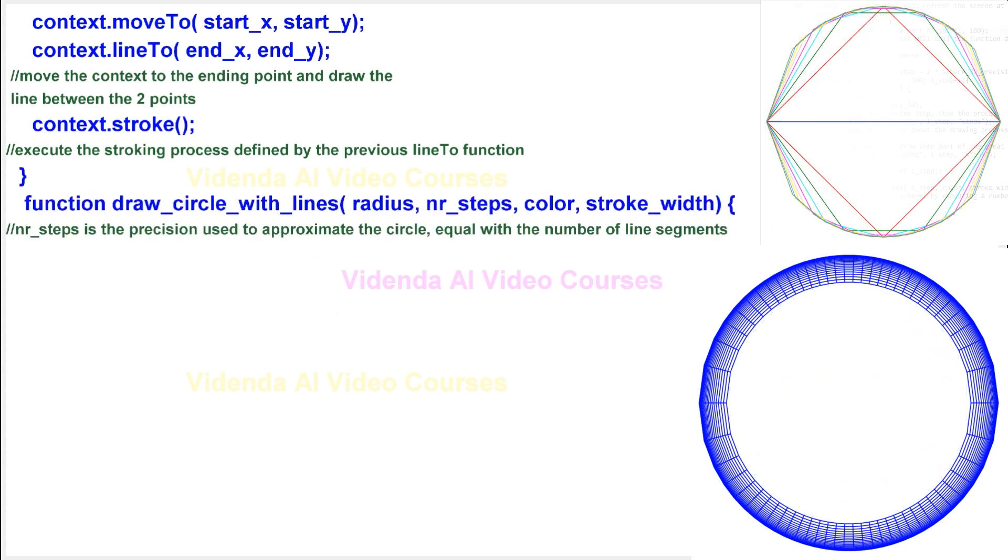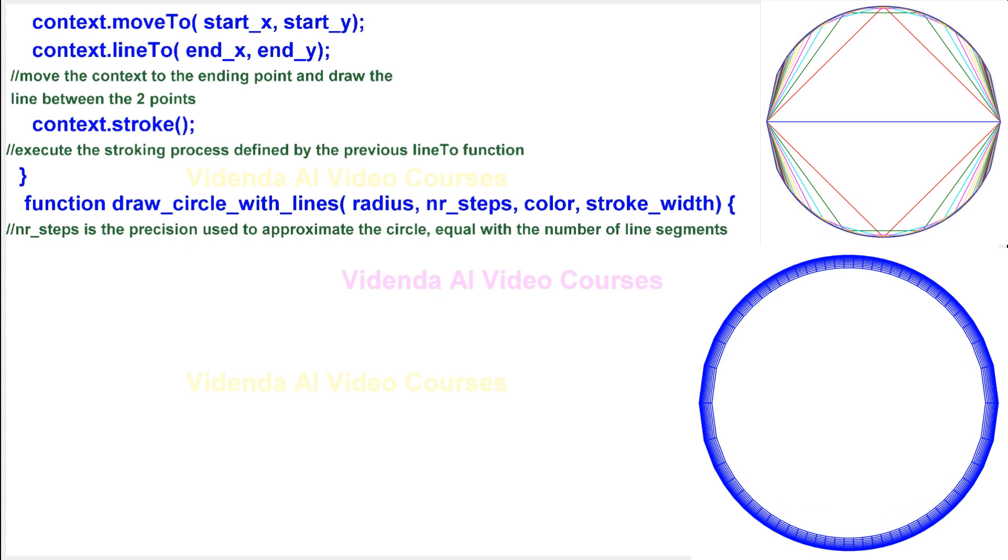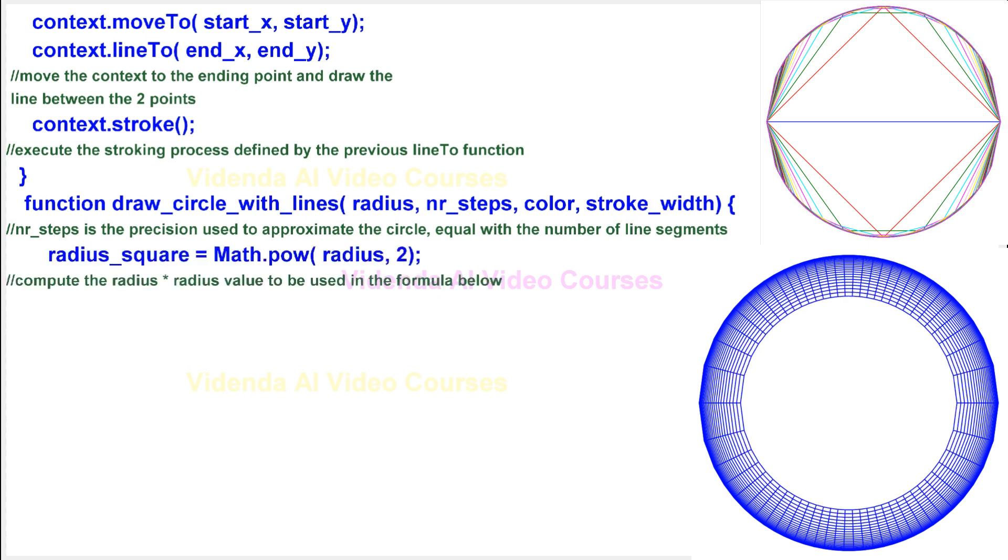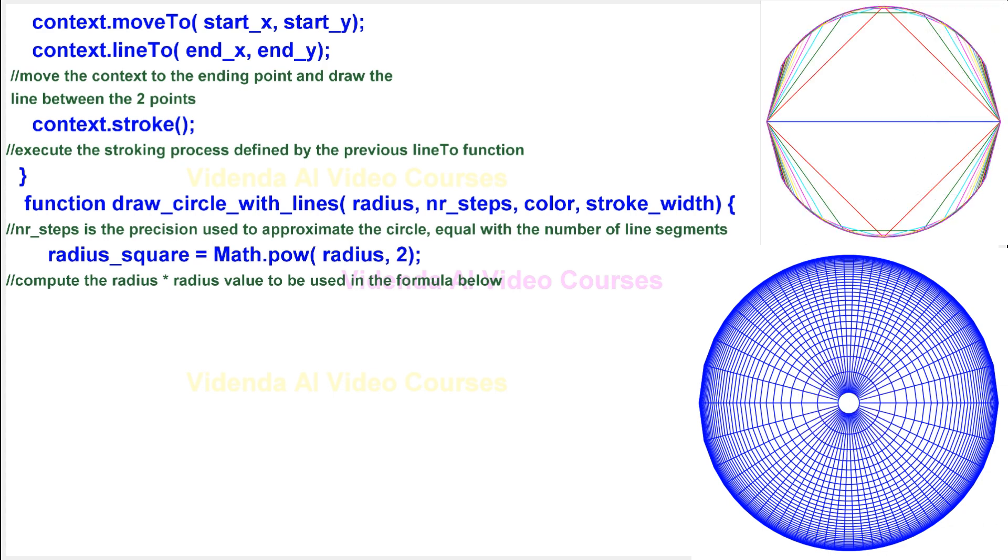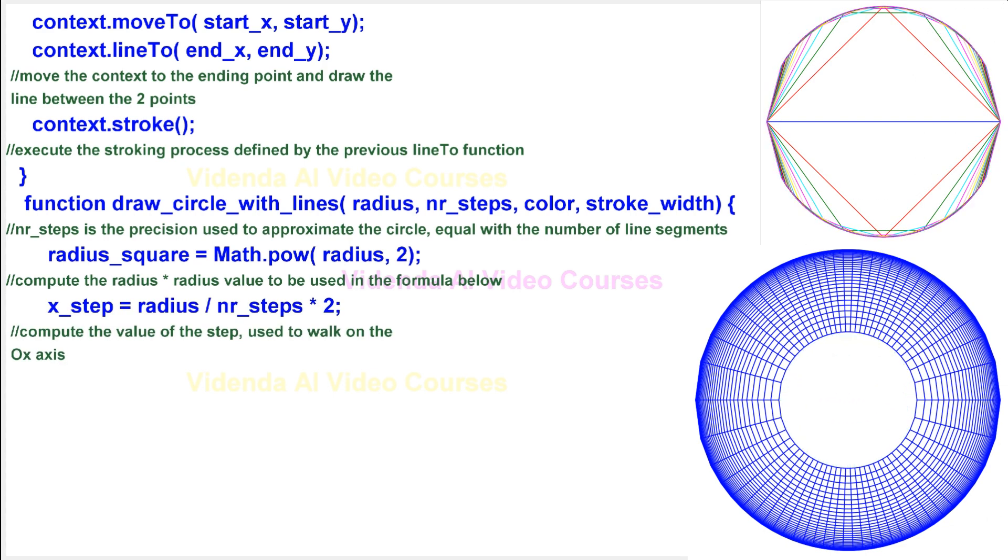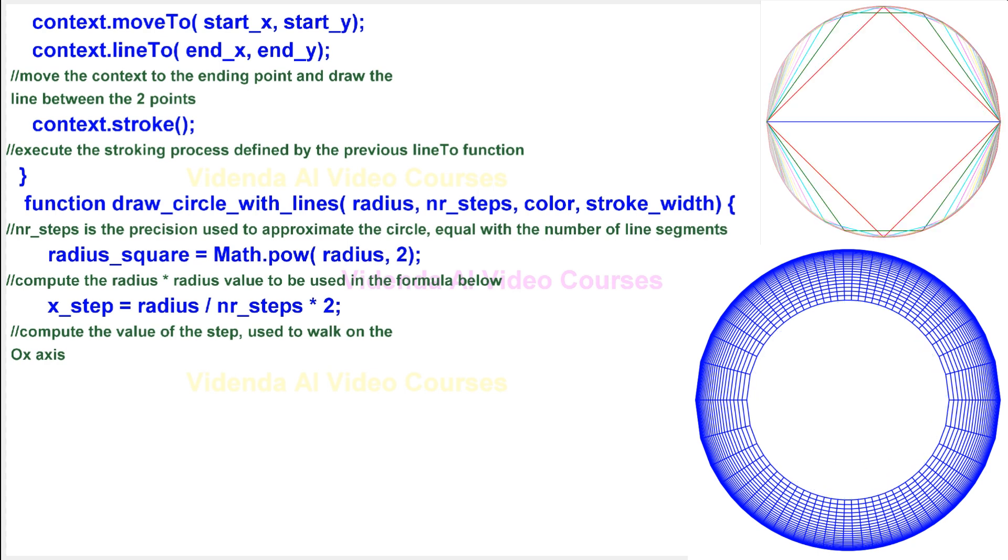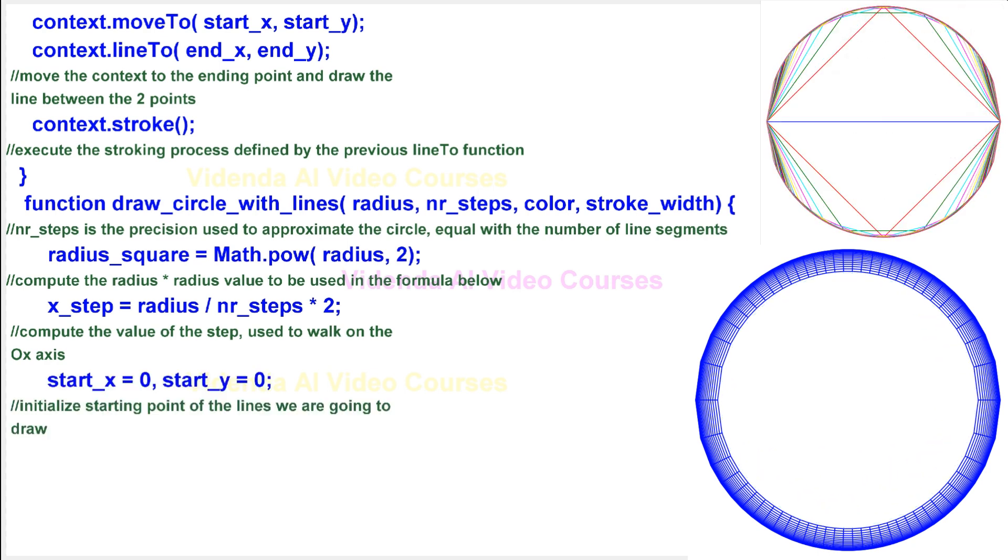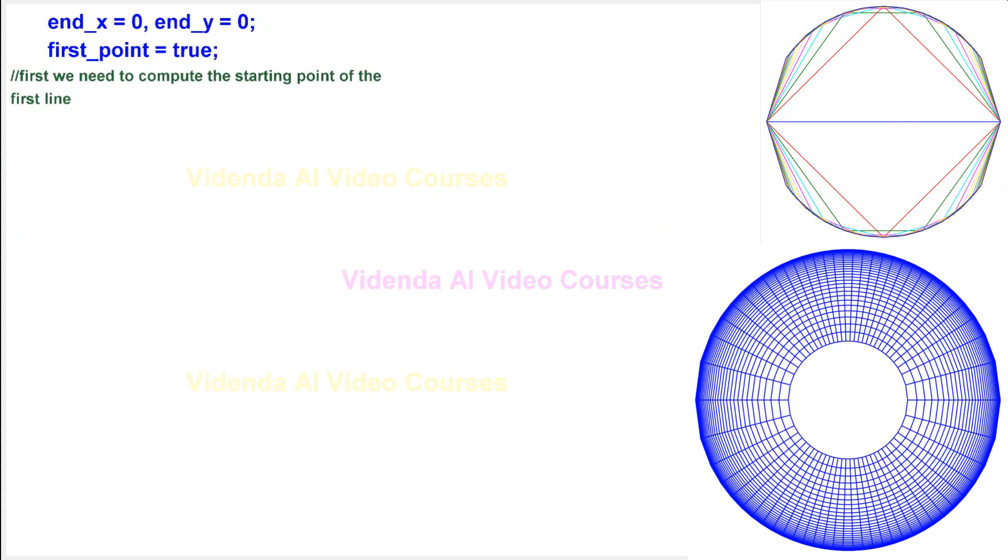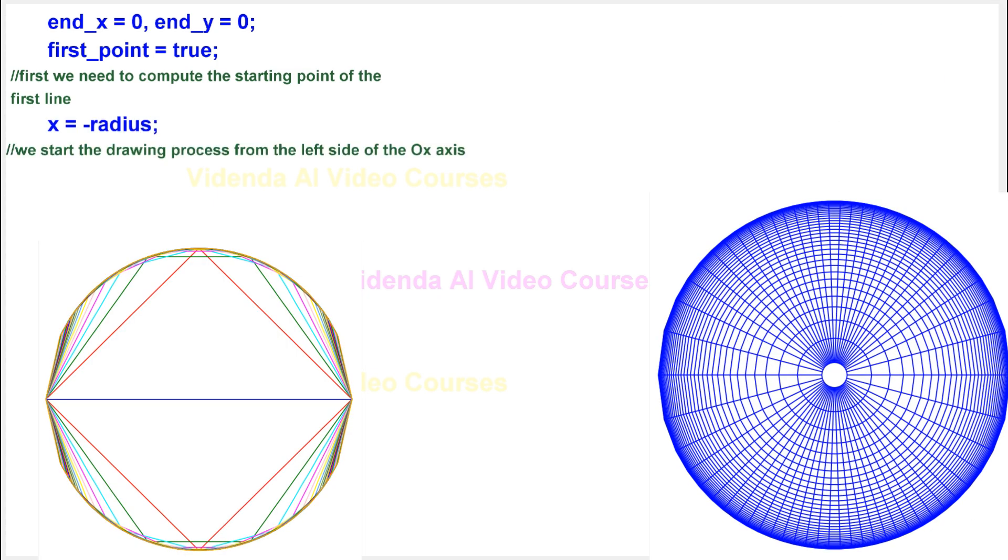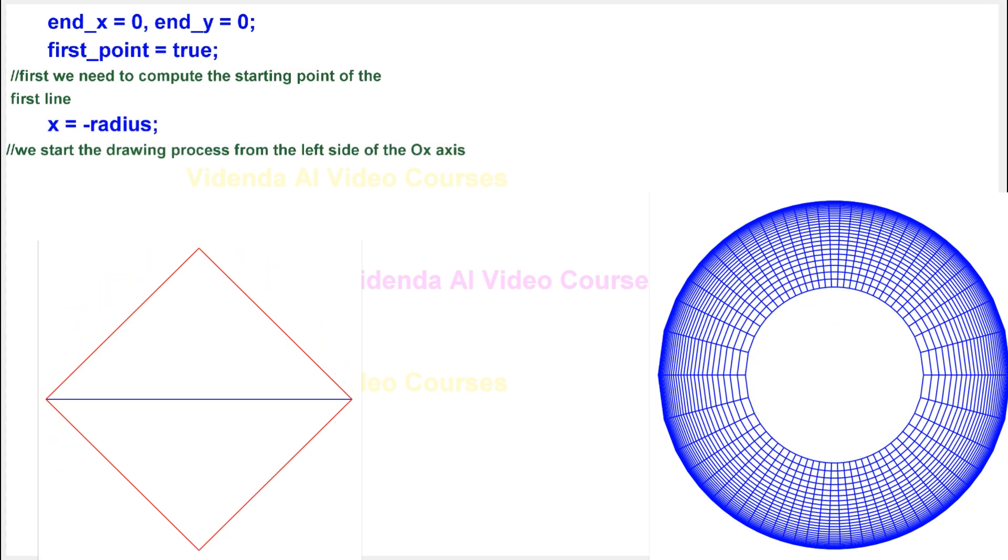NR underscore steps is the precision used to approximate the circle, equal with the number of line segments. Compute the radius asterisk radius value to be used in the formula below. Compute the value of the step used to walk on the ox axis. Initialize starting point of the lines we are going to draw. Initialize ending point. First we need to compute the starting point of the first line. We start the drawing process from the left side of the ox axis.